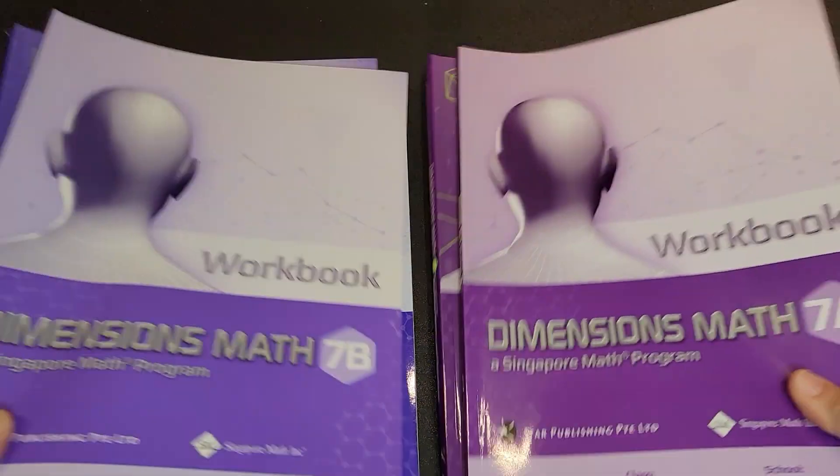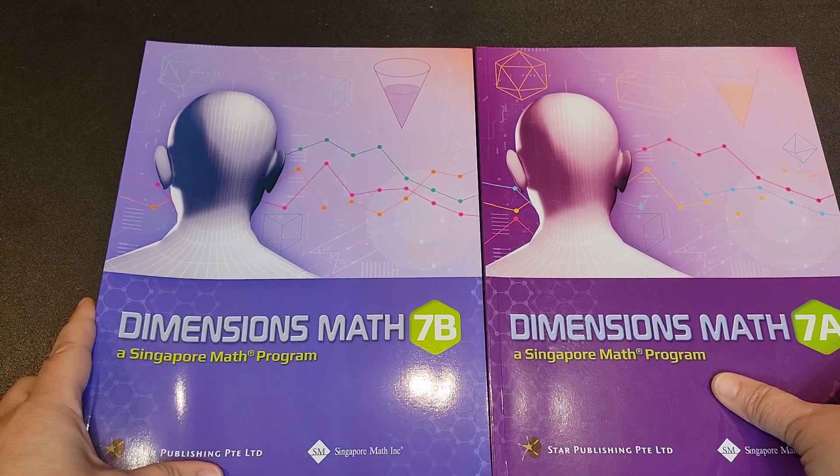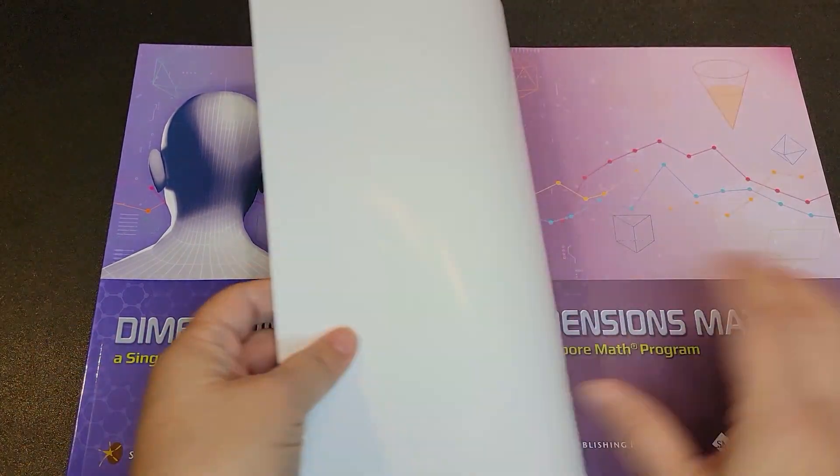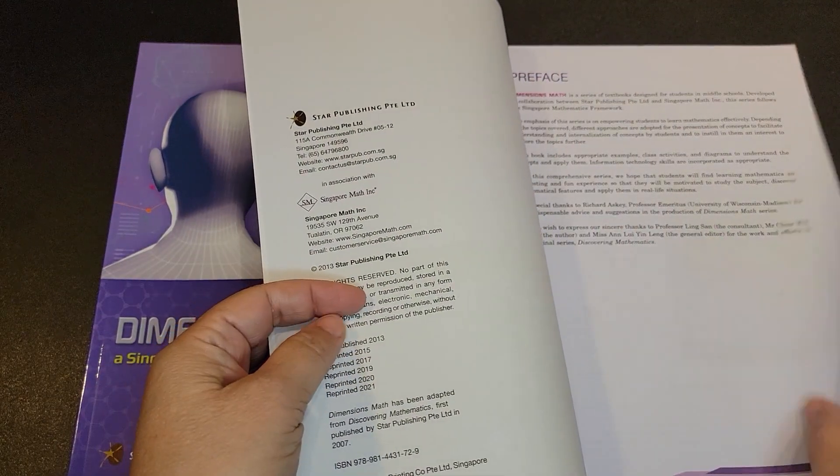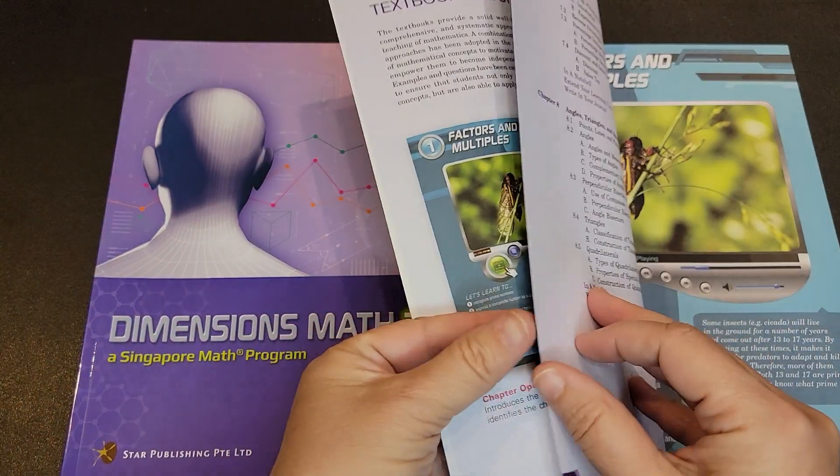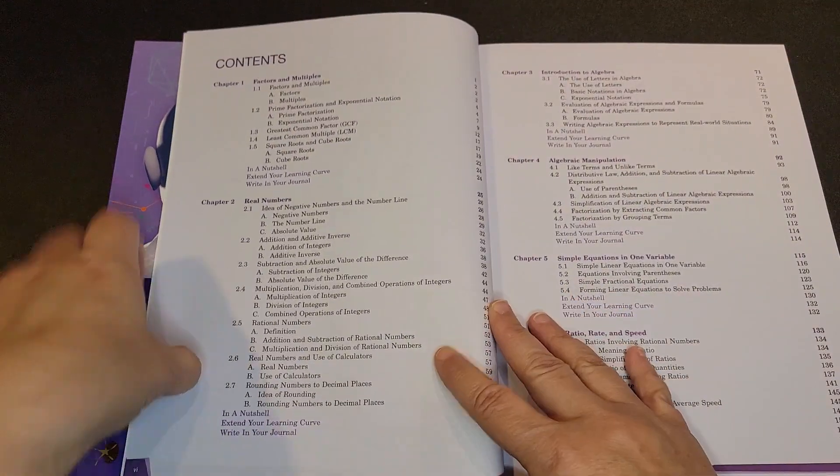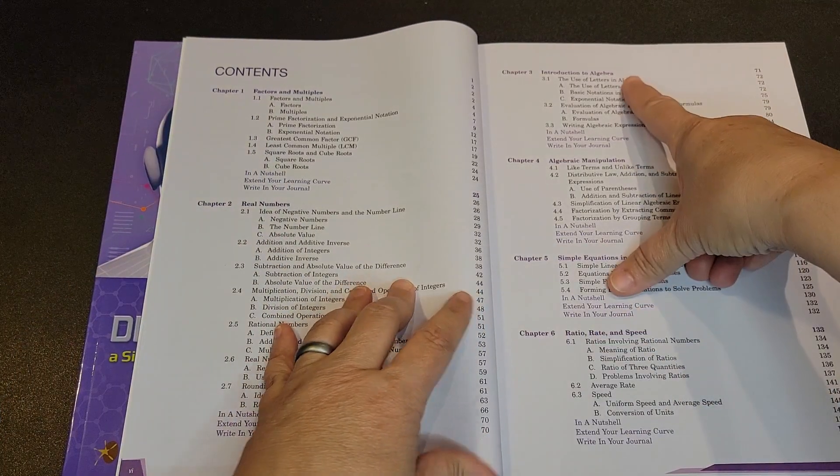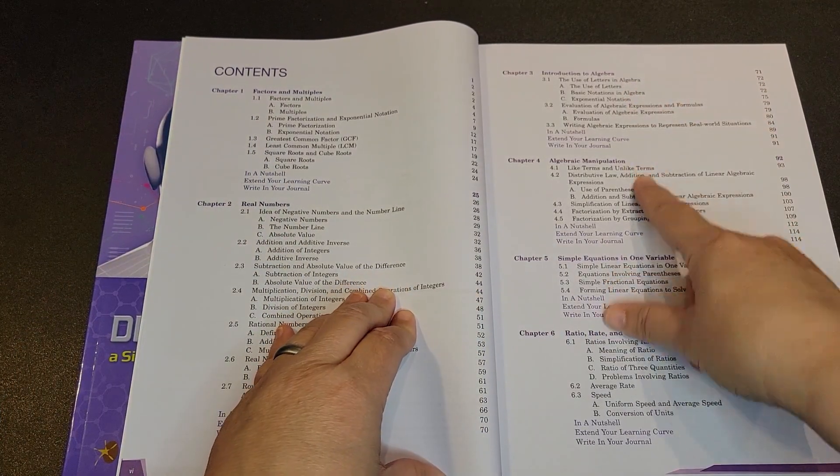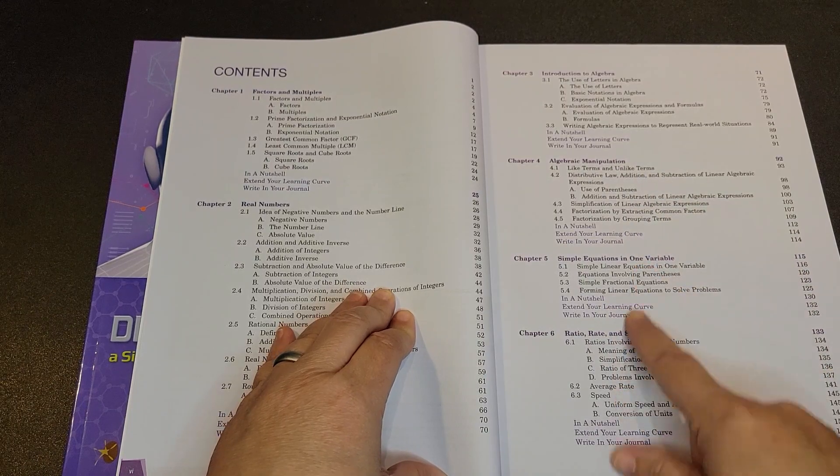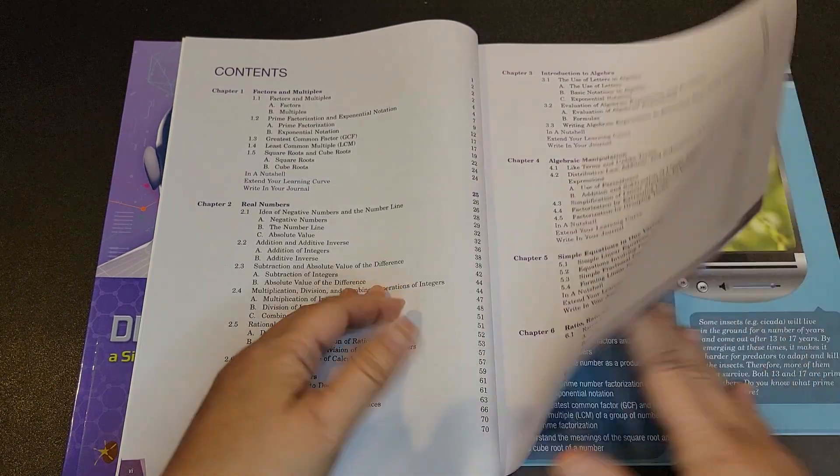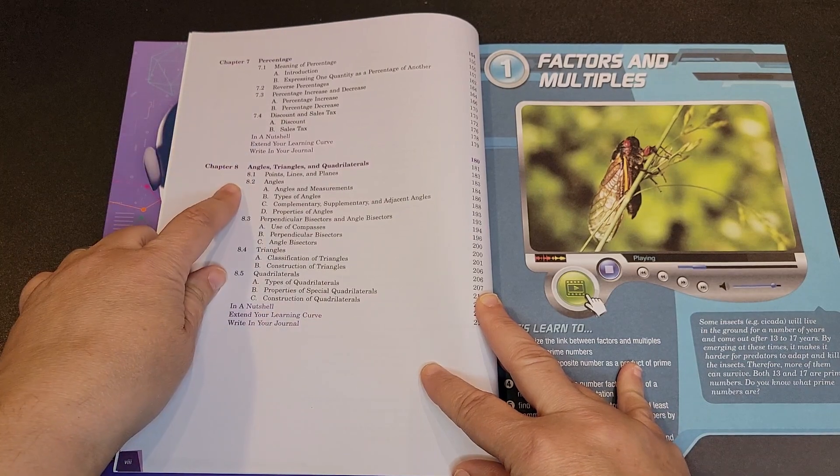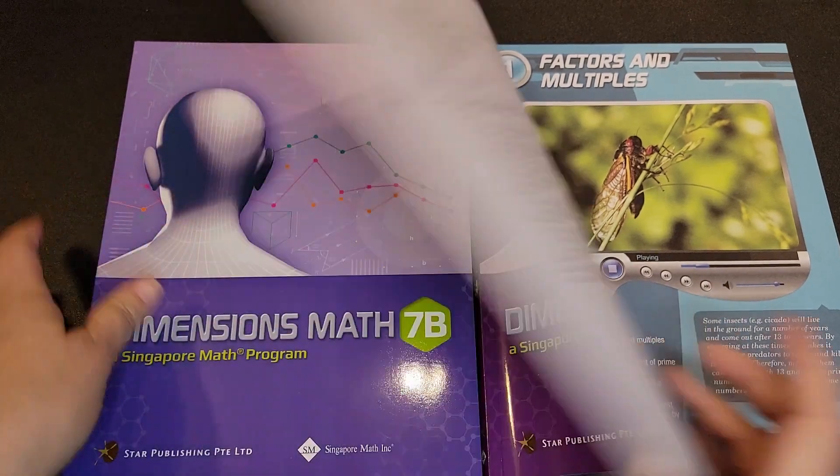So let's talk about the scope and sequence within each of these semesters. For Dimensions Math 7A, you will be focusing on factors and multiples, real numbers, introduction to algebra, algebraic manipulation, simple equations in one variable, ratio, rate and speed, percentages, and angles, triangles and quadrilaterals.